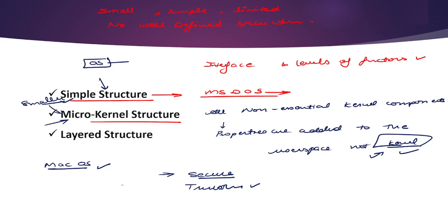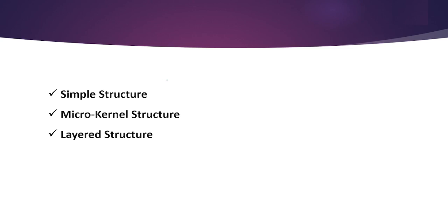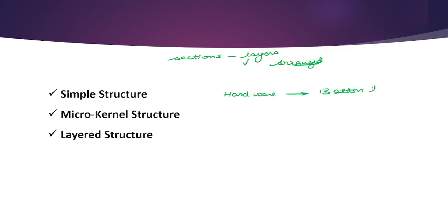The next structure is the layered structure. An operating system can be divided into different sections while retaining far more control over the system. The operating system is divided into different layers in a sequential arrangement. Hardware is on the bottom layer, which is layer number 0, and the user interface is on the top layer, which is layer number N.